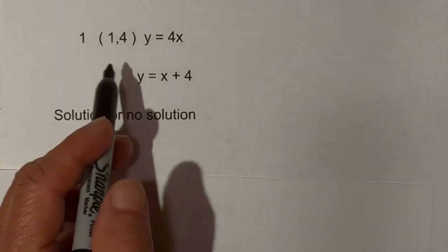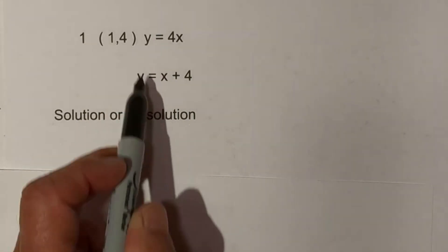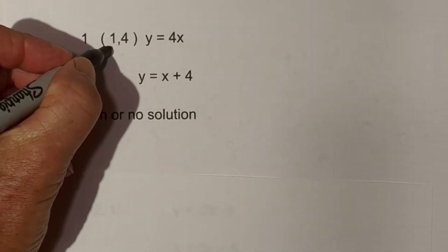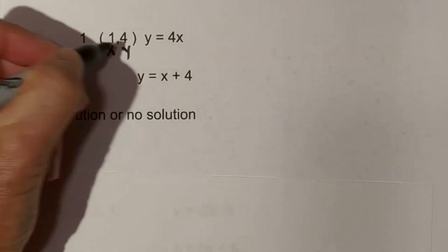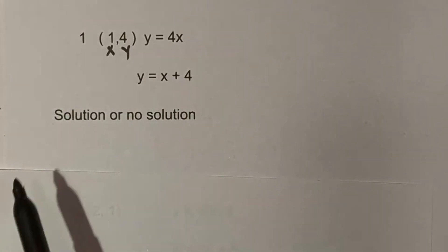Let's take a look at this ordered pair and see if it is a solution or no solution for this system of equations. When you look at the ordered pair, you always have x first and then y. So all we do is plug in these numbers into the equations.